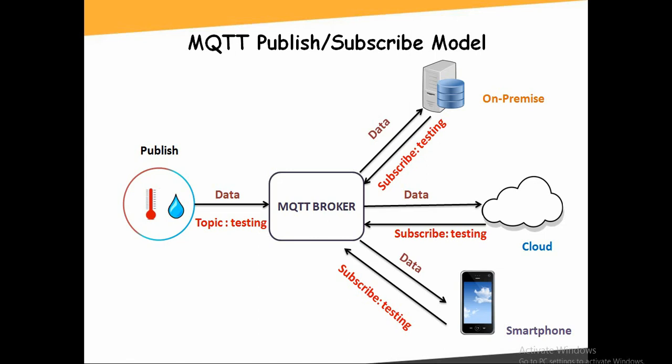Take a look at this diagram. We have a publisher publishing data on topic name 'testing' to the MQTT broker. You need to install the MQTT broker — check the description to download and install it. Here we publish data on topic 'testing' to the MQTT broker.